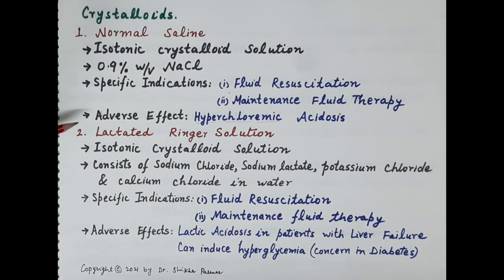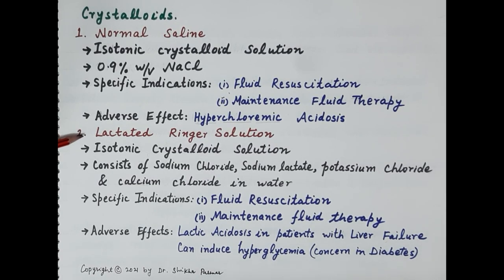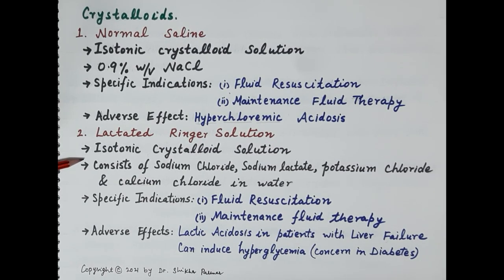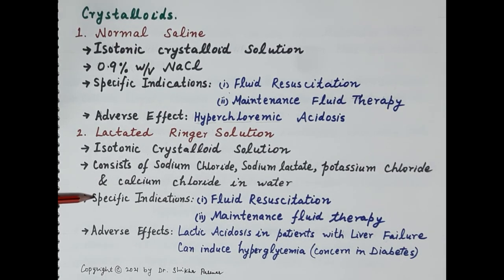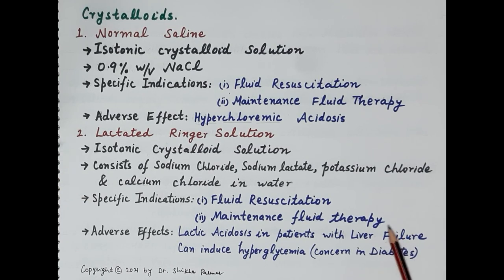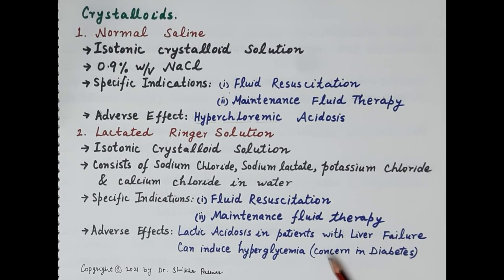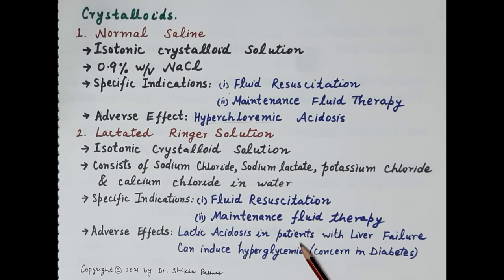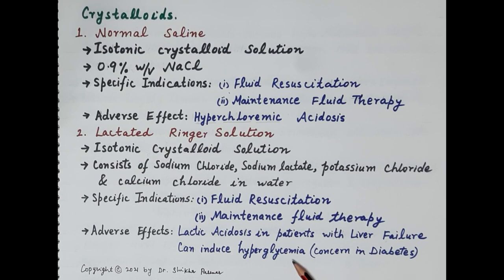The next crystalloid is lactated Ringer's solution, also an isotonic crystalloid solution. It consists of sodium chloride, sodium lactate, potassium chloride, and calcium chloride in water. The specific indications are fluid resuscitation and maintenance fluid therapy. Regarding adverse effects, lactated Ringer's can produce lactic acidosis in patients with liver failure and can also induce hyperglycemia, so caution is required in diabetic patients.